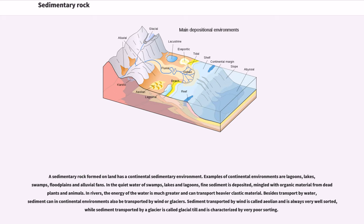A sedimentary rock formed on land has a continental sedimentary environment. Examples of continental environments are lagoons, lakes, swamps, floodplains and alluvial fans. In the quiet water of swamps, lakes and lagoons, fine sediment is deposited, mingled with organic material from dead plants and animals. In rivers, the energy of the water is much greater and can transport heavier clastic material. Sediment can in continental environments also be transported by wind or glaciers. Sediment transported by wind is called aeolian and is always very well sorted, while sediment transported by a glacier is called glacial till and is characterized by very poor sorting.